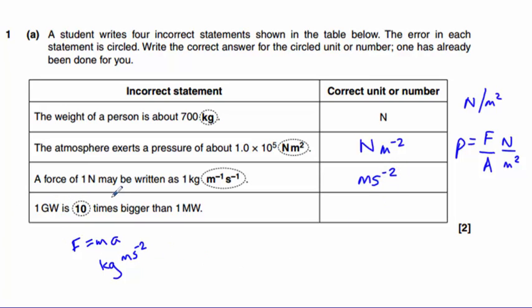1 gigawatt is 10 times bigger than 1 megawatt. Well, 1 gigawatt is 10 to the power of 9 watts. 1 megawatt is 10 to the power of 6 watts. So that's 10 to the 3 times bigger, or 1,000 times bigger.